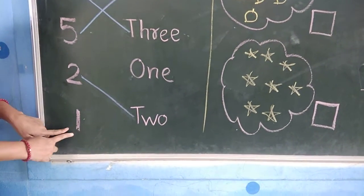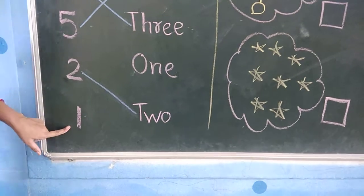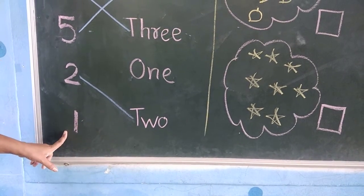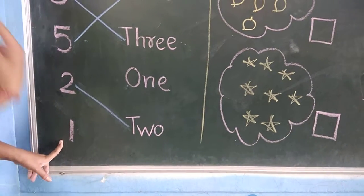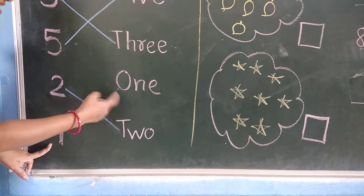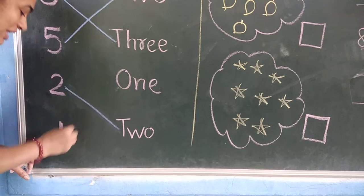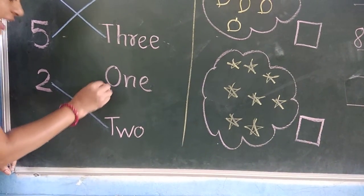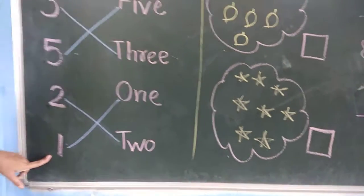See here — which number? 1. And what is the name of number 1? O-N-E. Where is it? So we will match the number with their name.